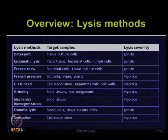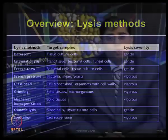Freeze-thaw can be used for bacterial cells or cultured cells — again a gentle lysis method. French pressure is often applied on bacteria, algae, and yeast — this is a vigorous lysis method. Glass beads are used with cell suspensions or organisms with cell walls — also a vigorous lysis method.